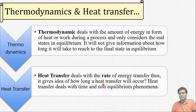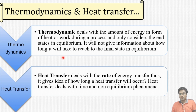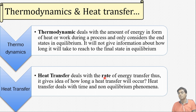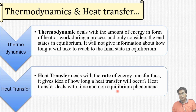Thermodynamics deals with the amount of energy in the form of heat or work during a process and only considers the end state in equilibrium. It tells us the direction of heat transfer, but does not give information about how long it will take to reach the final equilibrium state. Whereas in heat transfer, we deal with the rate of heat transfer — the rate of energy transfer — and it gives us the idea of how long a heat transfer will occur and how much time a system will take to reach an equilibrium state. Heat transfer deals with time and non-equilibrium phenomena. This is the basic and most important difference between thermodynamics and heat transfer.